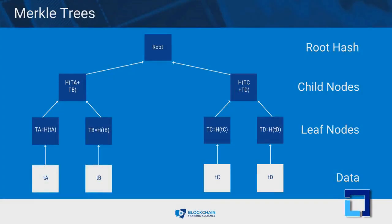Blockchains use Merkle trees for fast and efficient validation of data. Merkle trees summarize the entire set of data in a block by creating a root hash of that data. The root hash is created by repeatedly hashing pairs of child nodes until only one node is left.